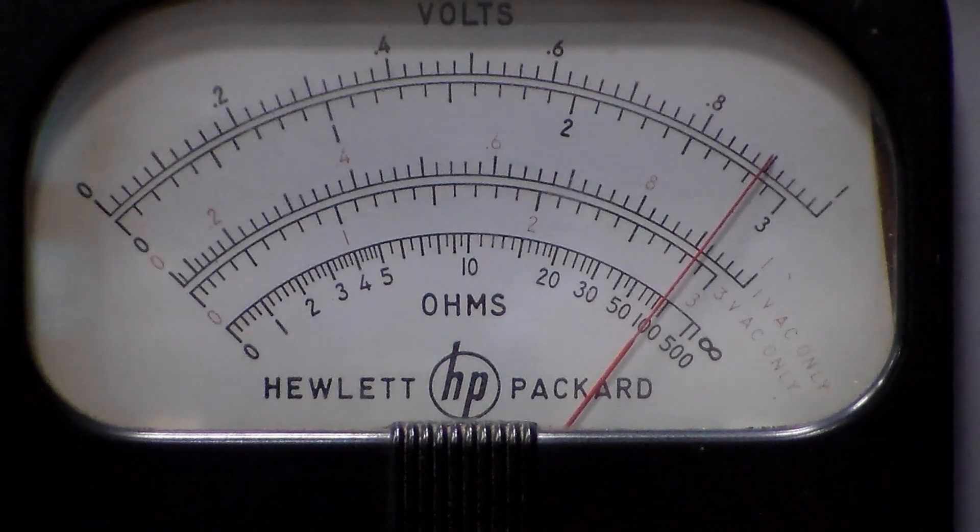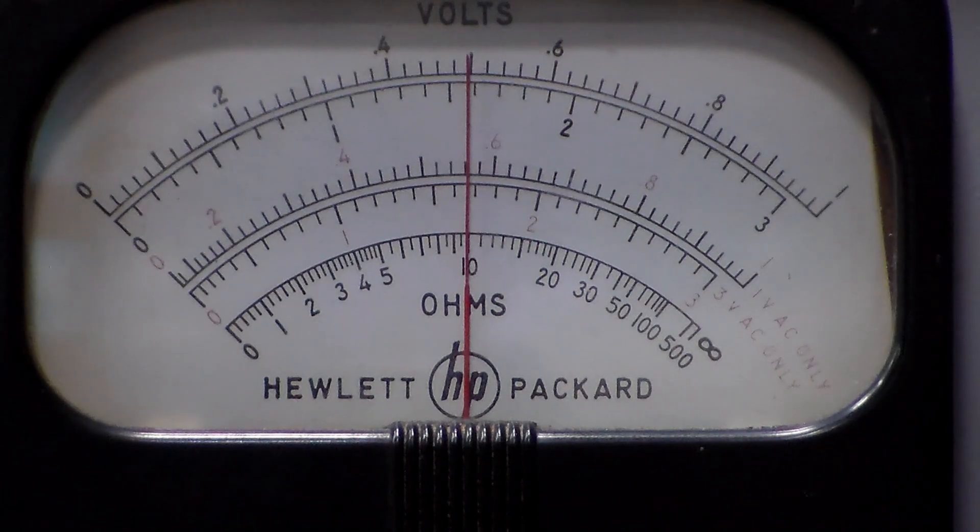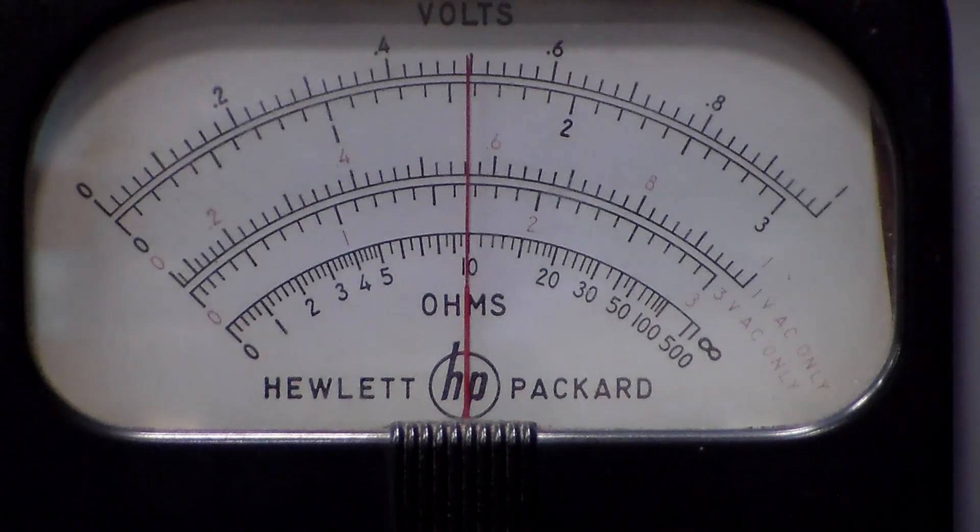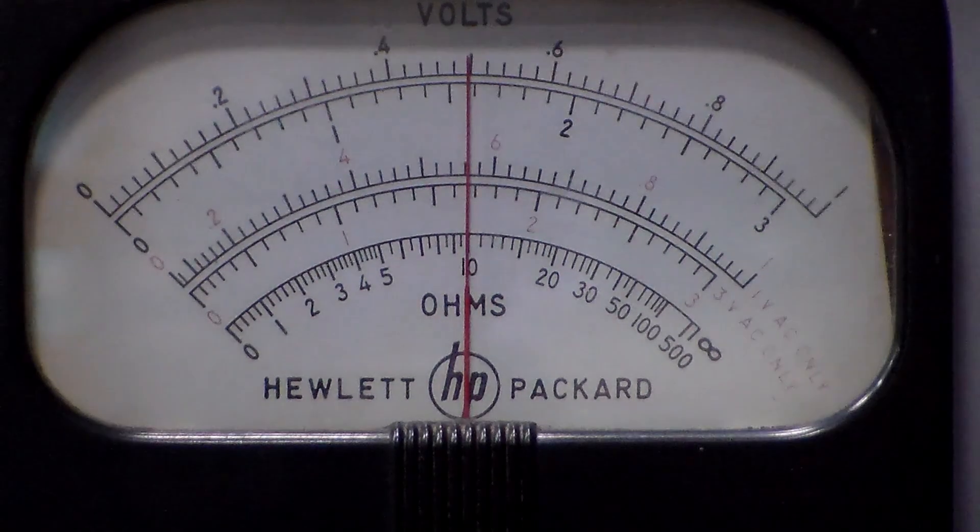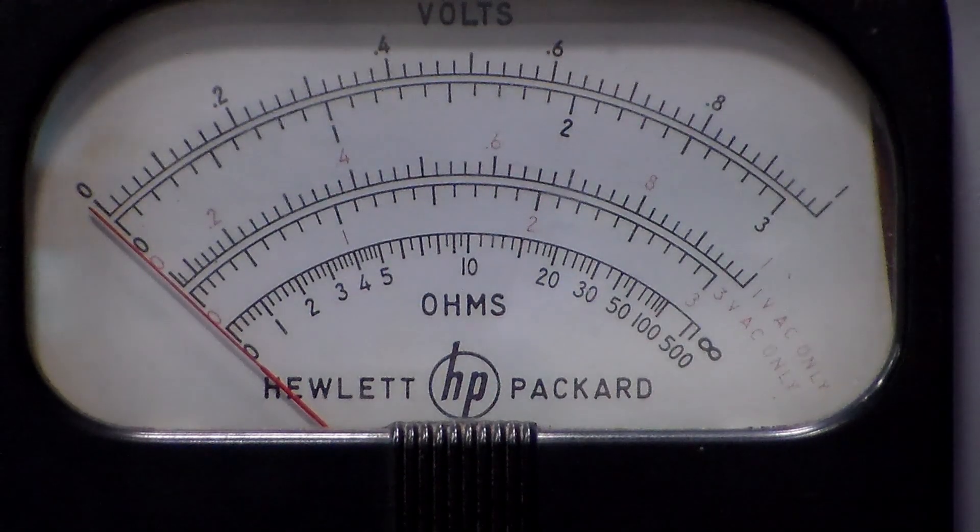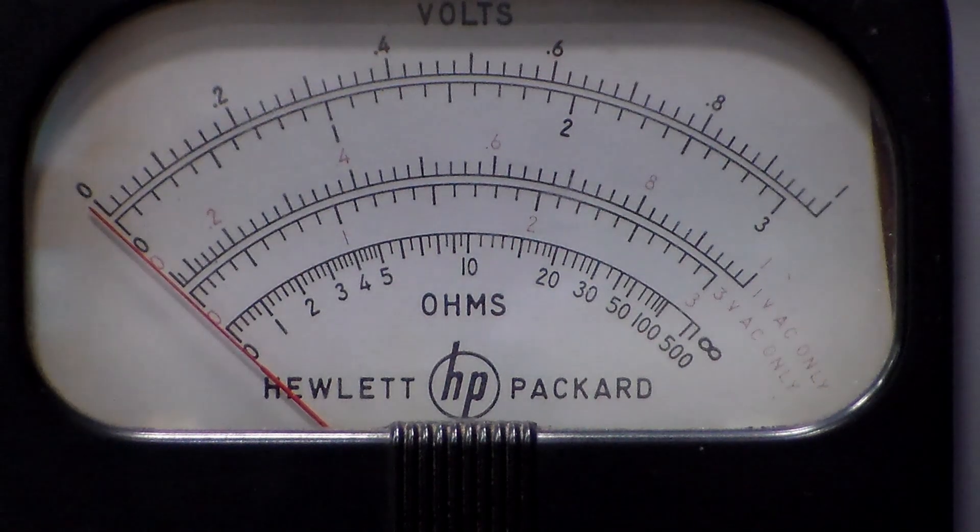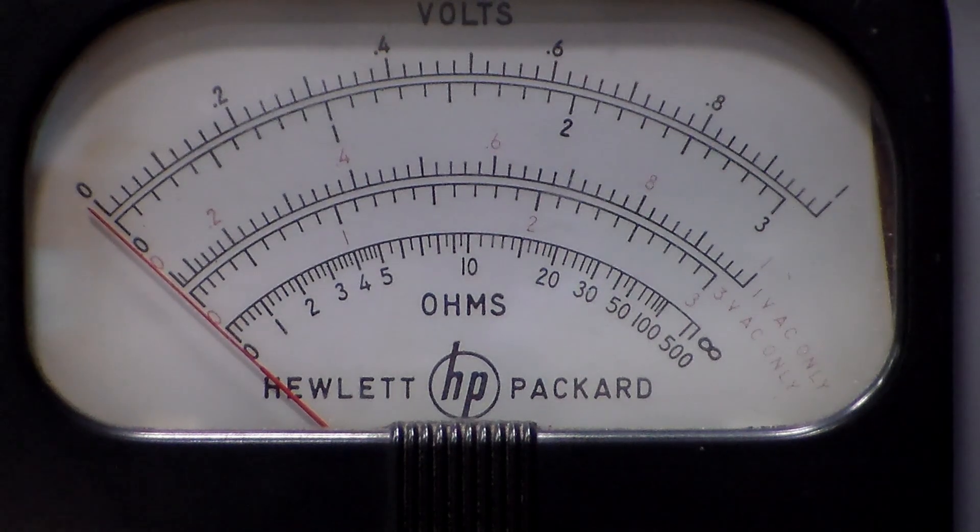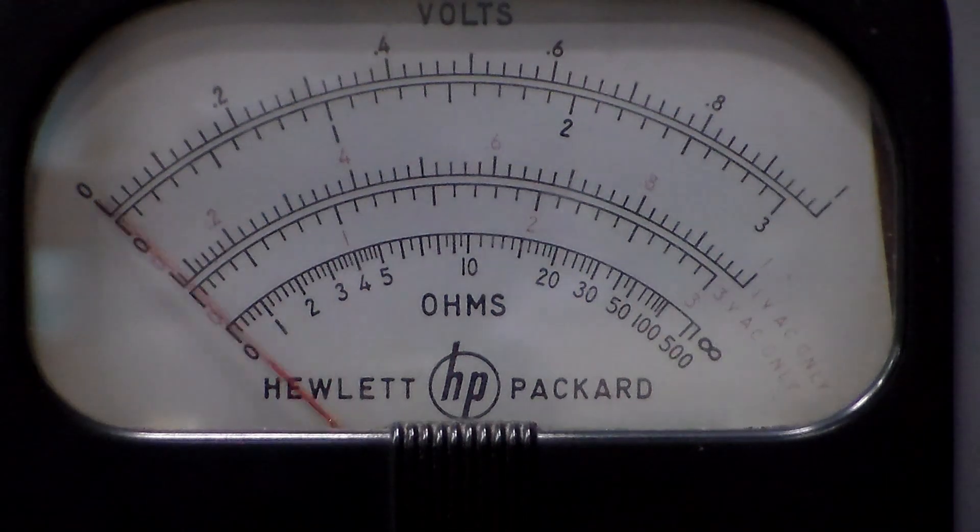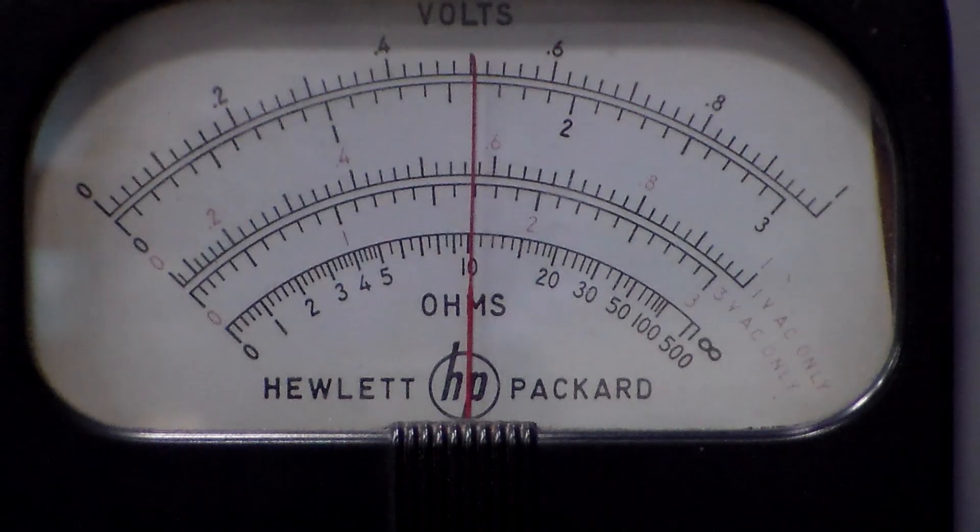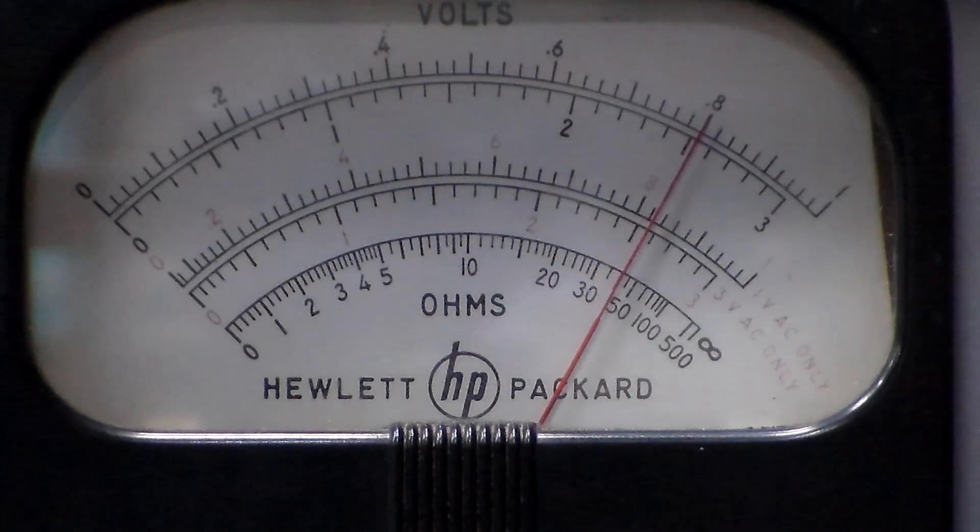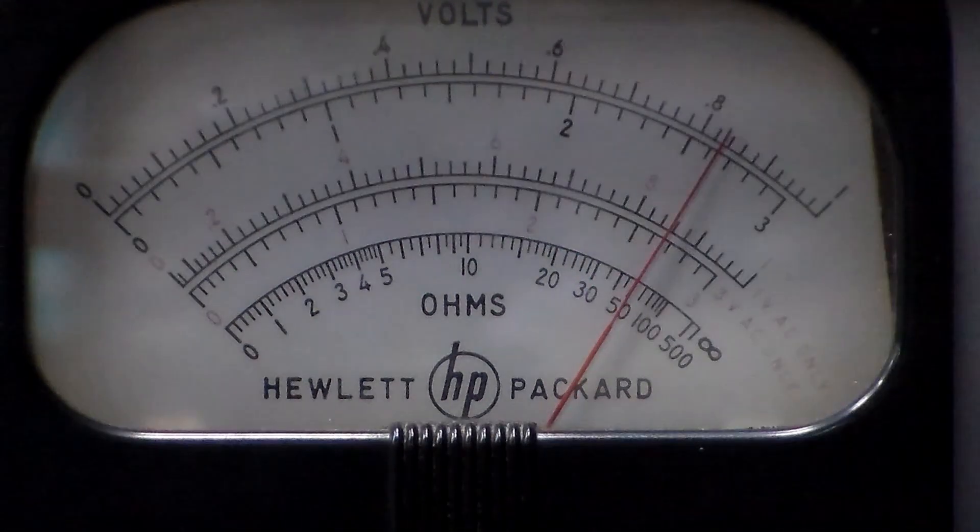We'll go now onto the times 10 range. We'll show 10 on there and we're reading pretty well spot on there. I'll just run this back to zero. We are actually on this range showing slightly our zero position is slightly out, so we'll just re-zero that so we can check. There's 100, 200, 300, 400, 500 and so on.